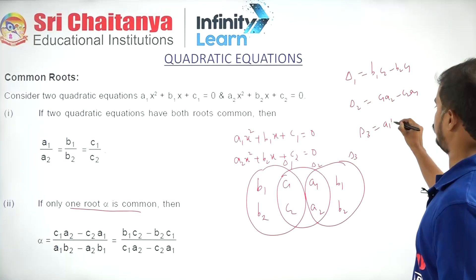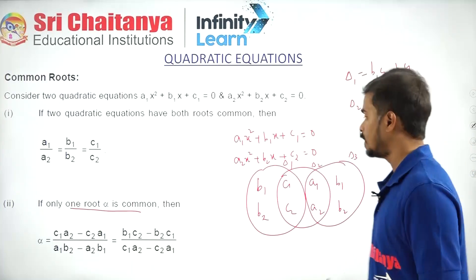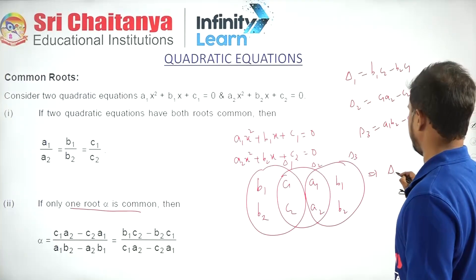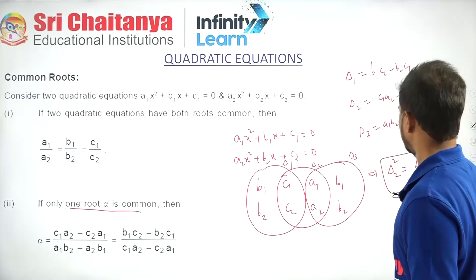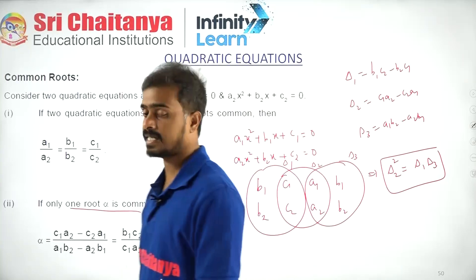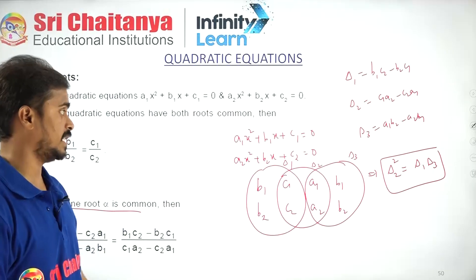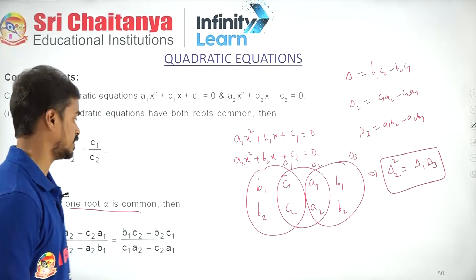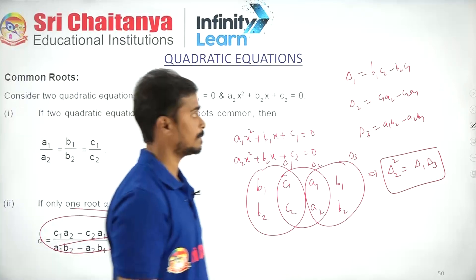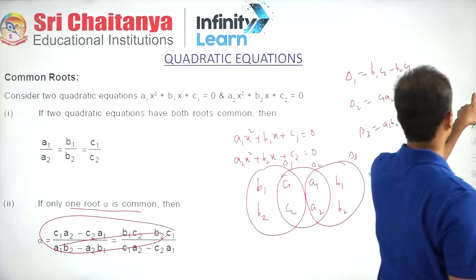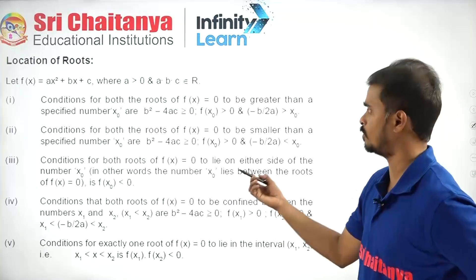The key conditions involve Δ₁, Δ₂, Δ₃ and A₁B₂ − A₂B₁. The important relation is Δ₂² = Δ₁ · Δ₃, meaning the discriminants are in geometric progression. This leads us to the location of roots and the student reference points for those conditions.